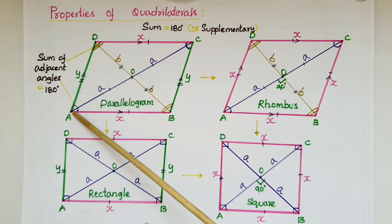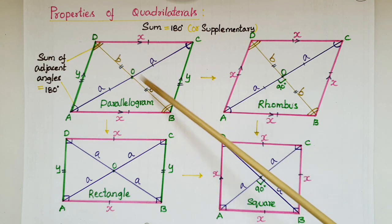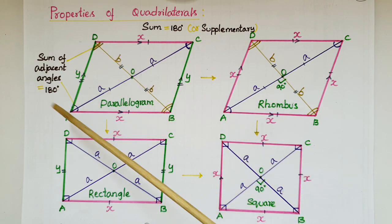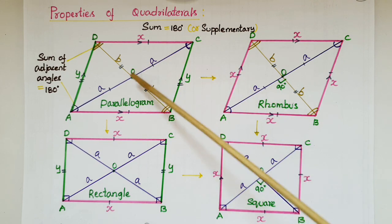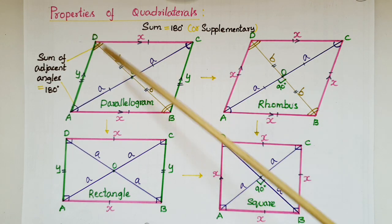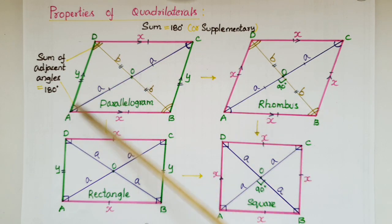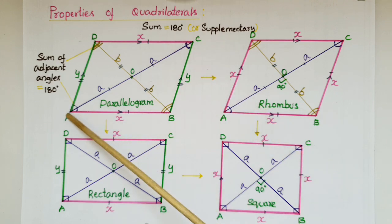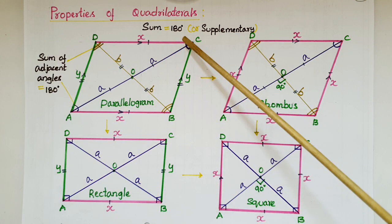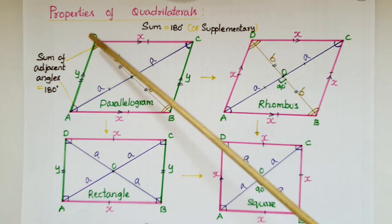In a parallelogram, diagonals bisect each other, so here OA is equal to OC and OB is equal to OD. Opposite angles of a parallelogram are equal, so here angle A is equal to angle C and angle B is equal to angle D.